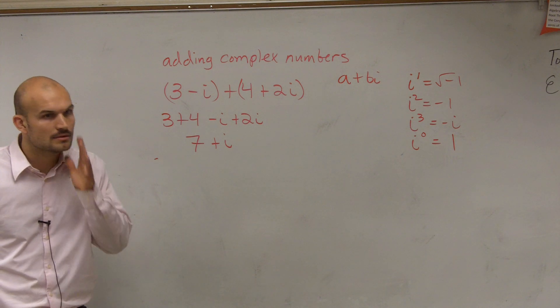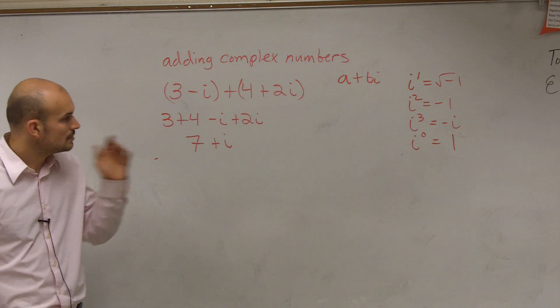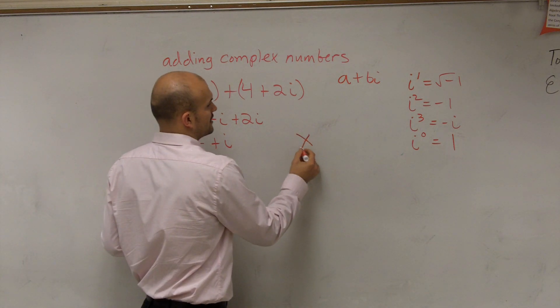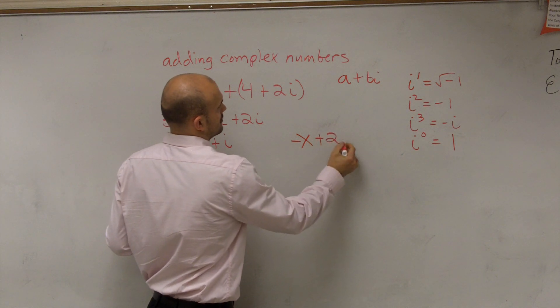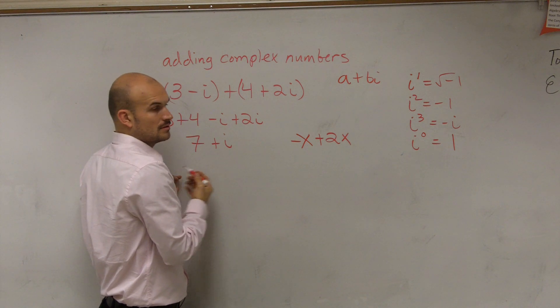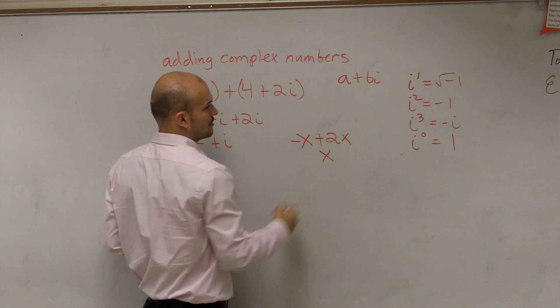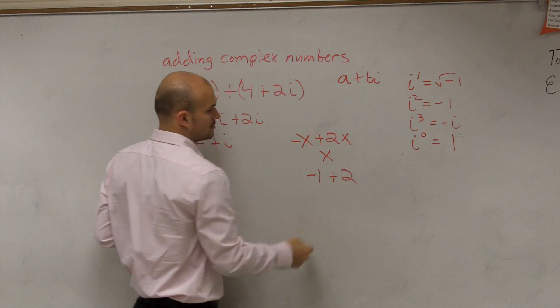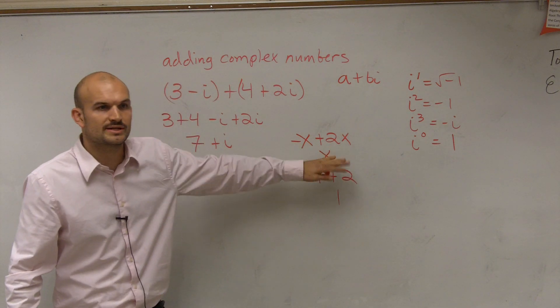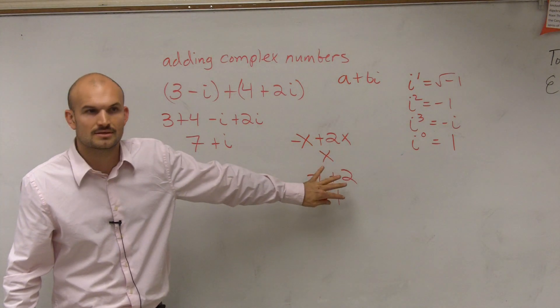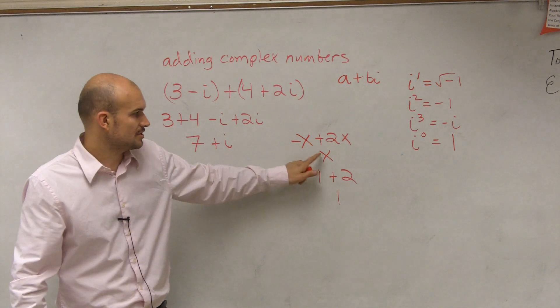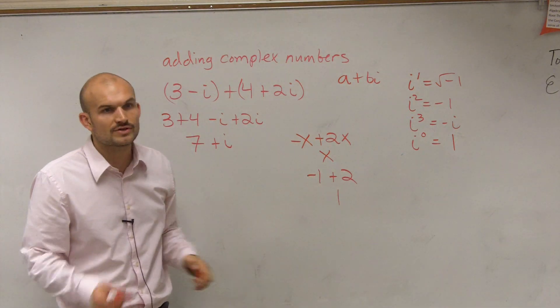Student: How do you get 1 from negative i plus 2i? Teacher: Remember I told you to think about it like your variables. What's negative x plus 2x? What's negative 1 plus 2? 1. Remember, when you combine variables, all you're doing is combining the coefficients of the variables. So when you're adding and subtracting variables, all you're doing is adding and subtracting the coefficients.